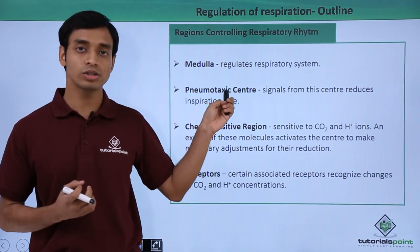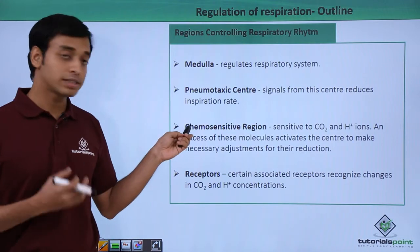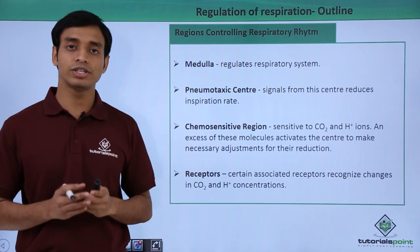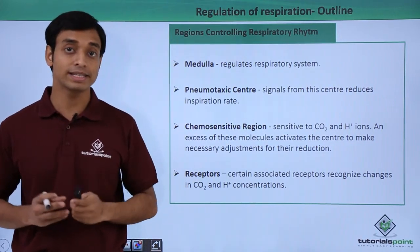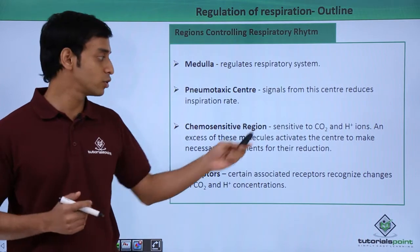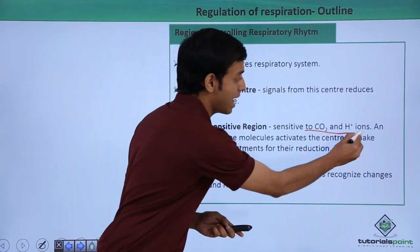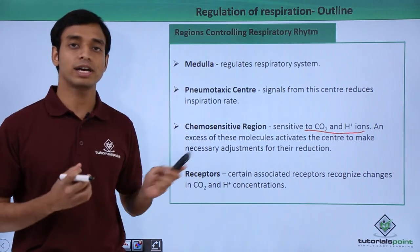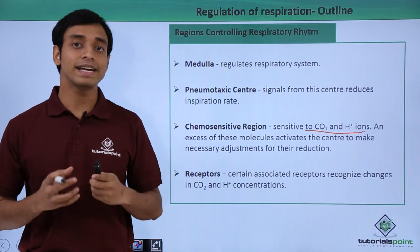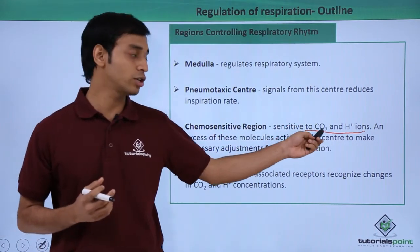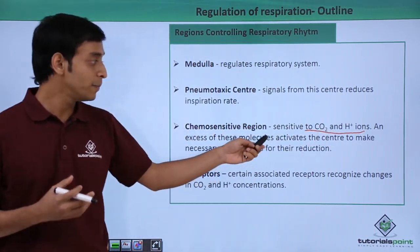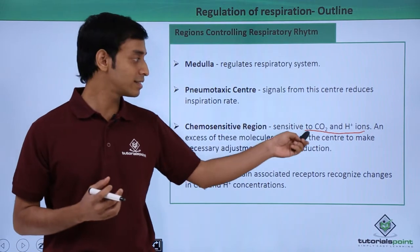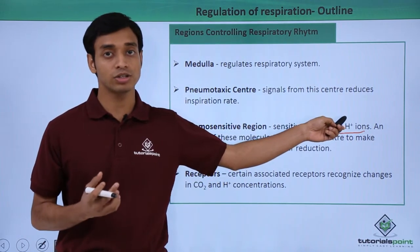The third area is known as the chemosensitive region. This region is present adjacent to the rhythmic center and is highly sensitive to carbon dioxide and hydrogen ion concentrations. If there is an excess of carbon dioxide and hydrogen ions present near the brain, this region senses that excess and activates to make necessary adjustments in order to control the excess carbon dioxide and hydrogen ion concentrations.